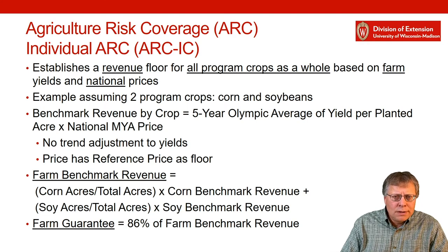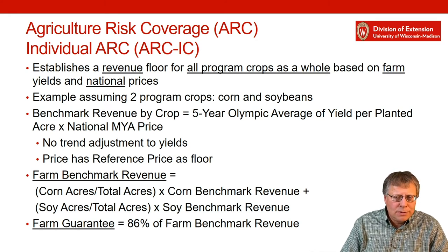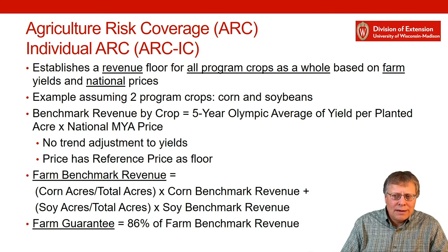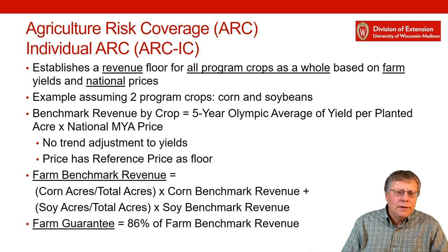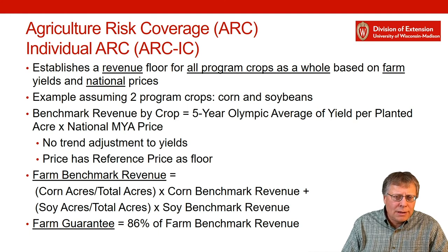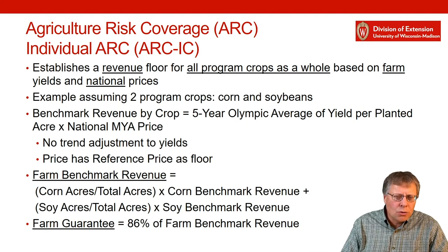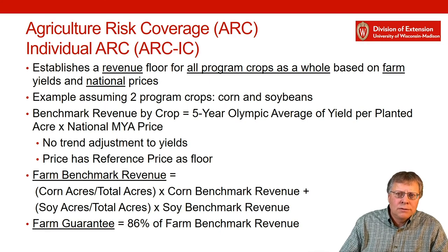Your farm benchmark revenue is calculated as the ratio of your corn acres planted divided by your total crop acres planted, times your corn benchmark revenue. Then you do the same for soybeans: the share of your planted acres that are soybeans times your soybean benchmark revenue. The key is how it's tied to the share of your planted acres in each program crop and your crop-specific benchmark based off your own yields and the national prices.